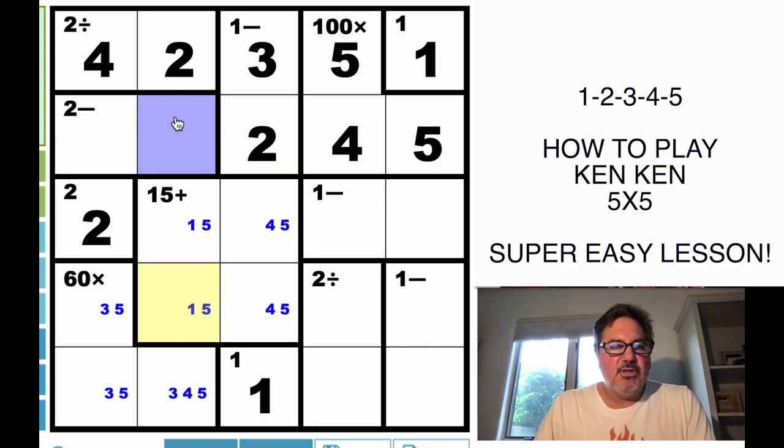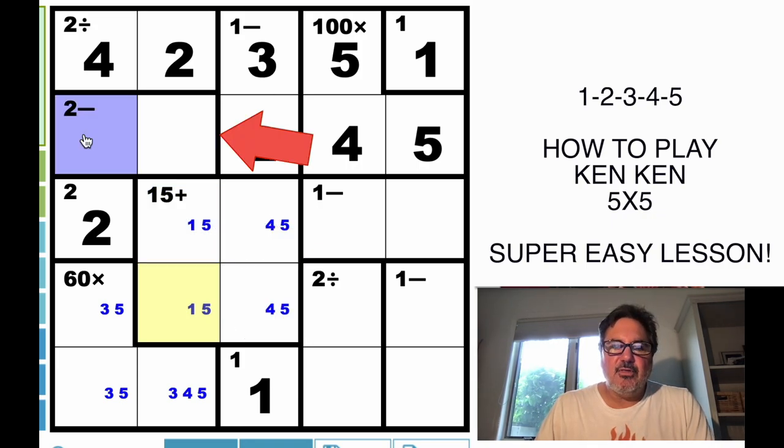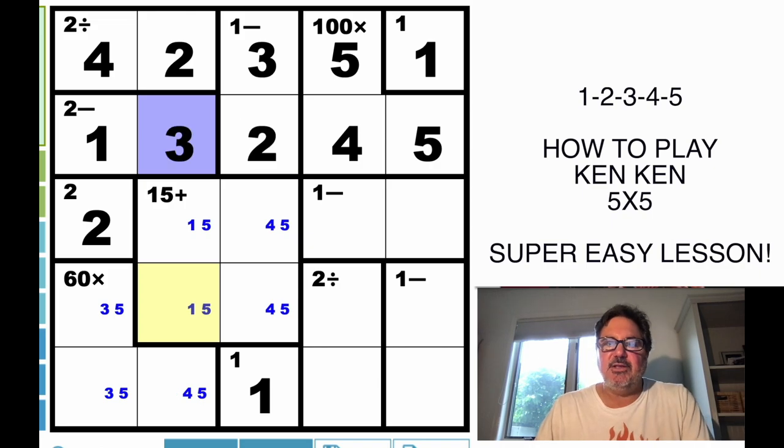Well, I could go ahead and put in the pencil marks, but there's actually already a solution to it. Because a 1 must go here or here, there's no way the 1 can go here. So therefore this must be the 1, and that must be the 3.